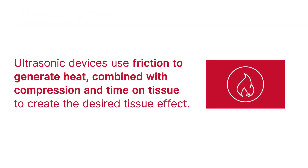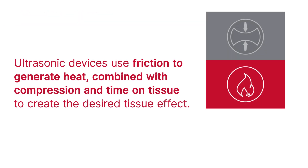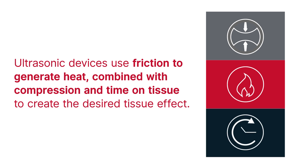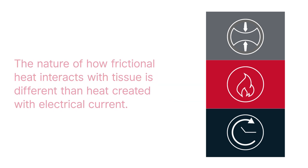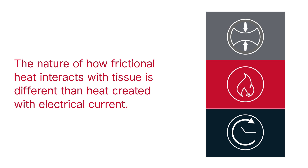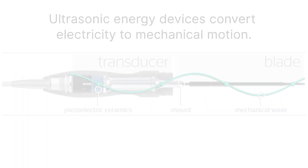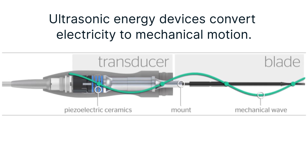Ultrasonic devices use friction to generate heat, combined with compression and time on tissue to allow surgeons to create the desired tissue effect. The nature of how frictional heat interacts with tissue is different than heat created with an electrical current, as you will learn in the monopolar and bipolar videos in this video series. The way in which ultrasonic energy devices convert electrical energy to mechanical motion is critical to understanding the concepts in this video.